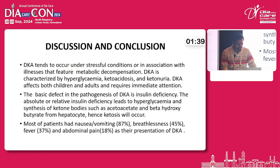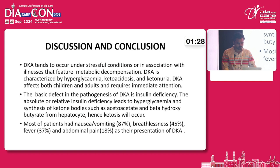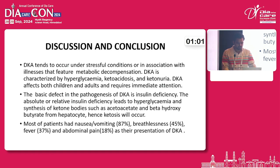Discussion and conclusion: DKA tends to occur under stressful conditions or in association with illness that features metabolic decompensation. DKA is characterized by hyperglycemia, ketoacidosis, and ketonuria, and affects both children and adults, requiring immediate attention. The basic defect in the pathology of DKA is insulin deficiency, with counter-regulatory hormones also raised, including catecholamines and glucagon. This absolute or relative insulin deficiency leads to hyperglycemia and synthesis of ketone bodies such as acetoacetate and beta-hydroxybutyrate from hepatocytes, hence ketosis occurs.